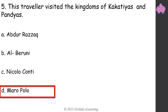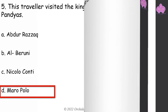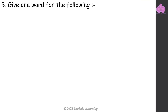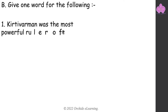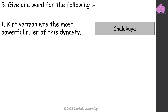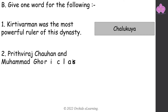Marco Polo. Give one word for the following. Kirti Varman was the most powerful ruler of this dynasty — Chalukya. Prithviraj Chauhan and Muhammad Gori clashed twice at this place — Tarain.